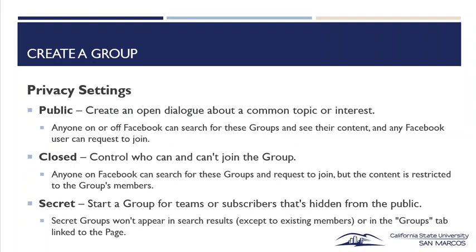Privacy settings — there are three main options. Public creates an open dialogue about a common topic; anyone on or off Facebook can search for these groups and see their content, and any Facebook user can request to join. A closed group controls who can and can't join — anyone on Facebook can search for it and request to join, but content is restricted to members; that's what our school group is. A secret group is hidden from the public and won't appear in search results except to existing members.